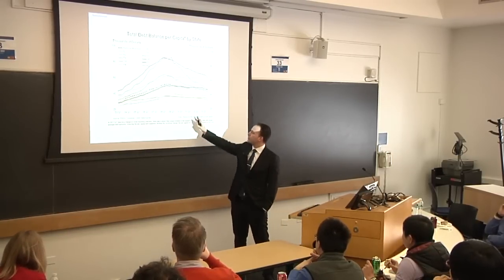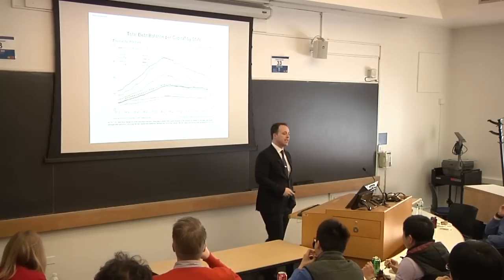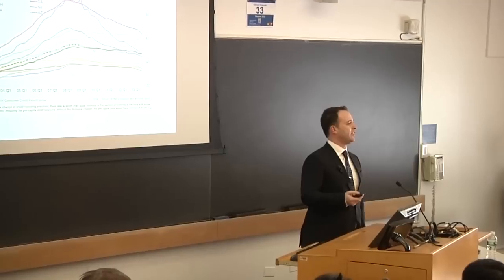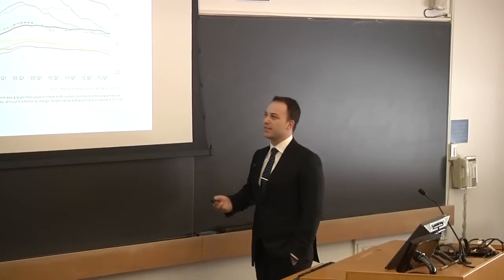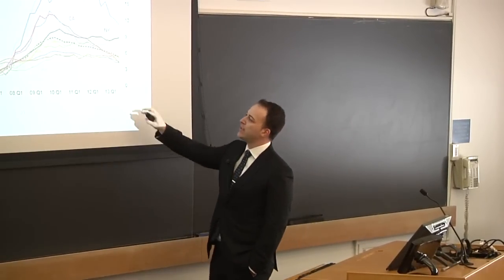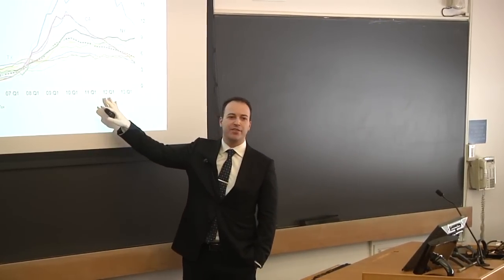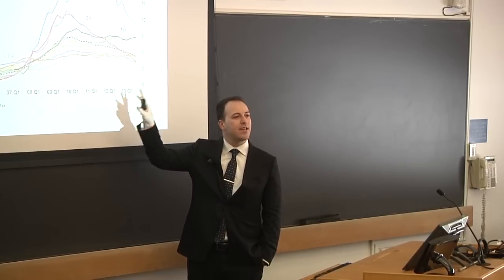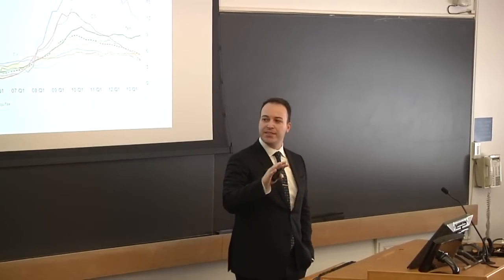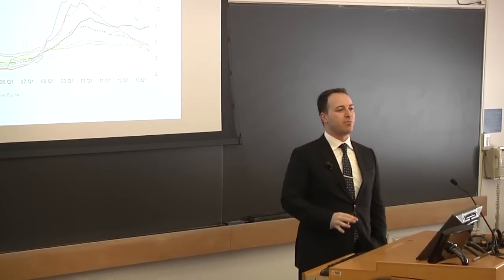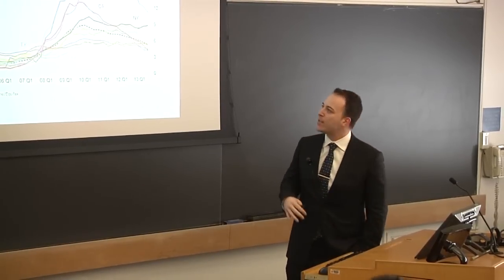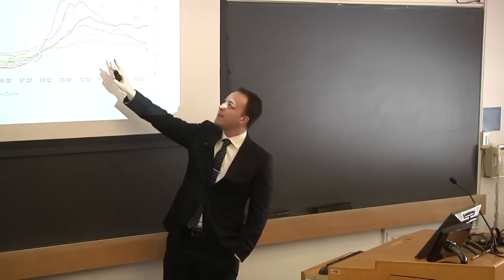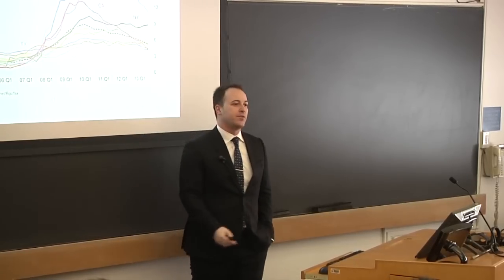Much less so for Texas and New York. Does this increase in credit supply also correspond to an increase in delinquency? Yes, it does. If we look at the same graph in terms of delinquency rates, we see that exactly the regions — the states in which we observe the huge increase and then decline in credit supply — are also the ones that experience a larger increase in delinquency: Nevada, Florida, California, New York.